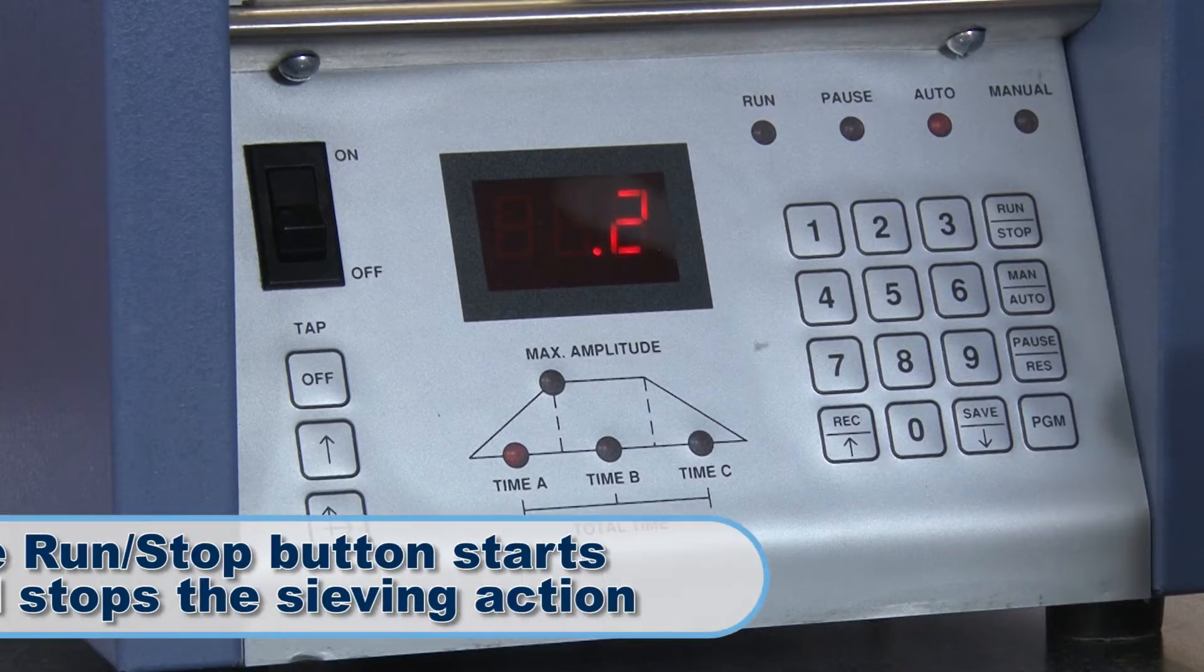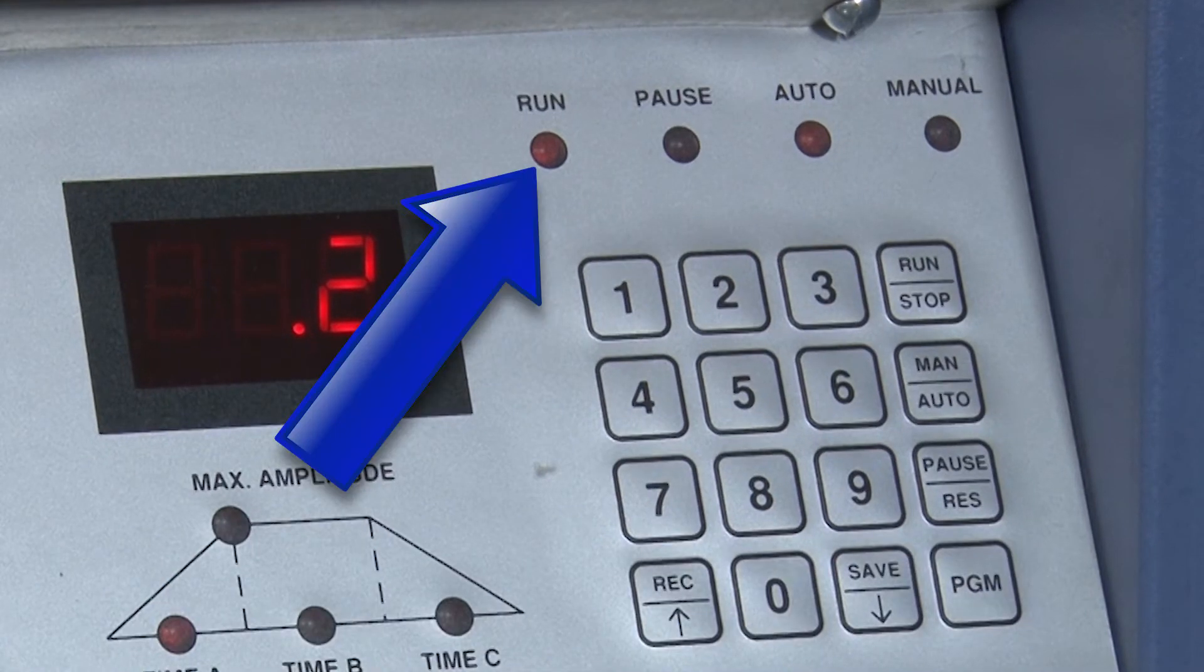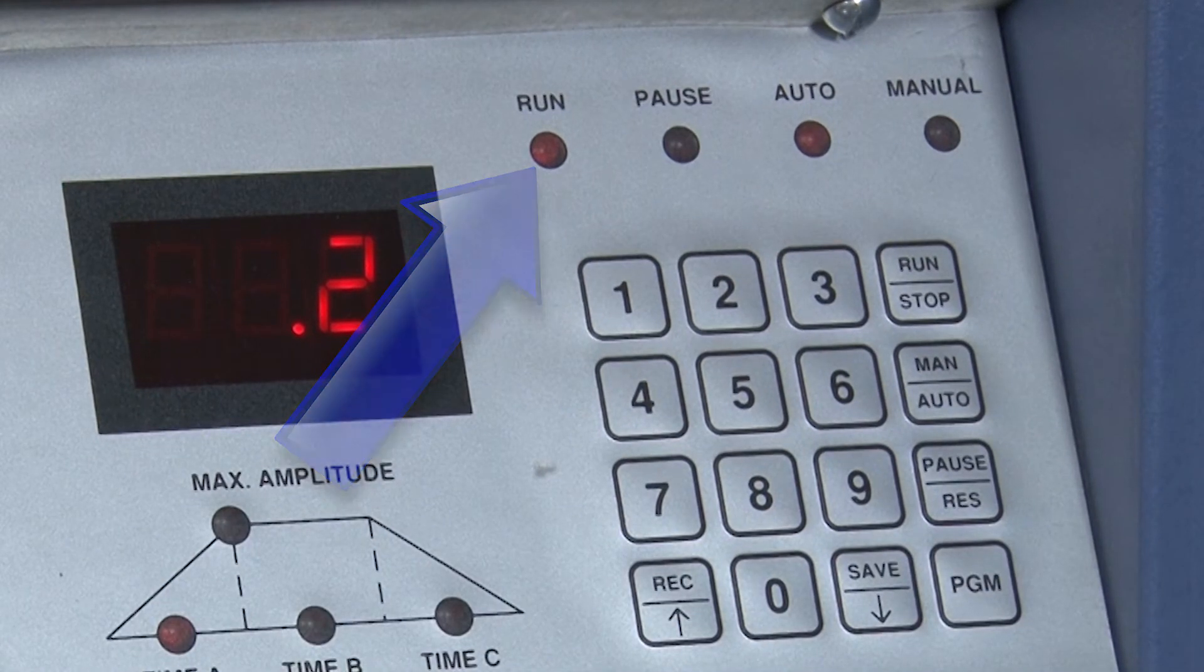The Run Stop button starts and stops the sieving action. The Run LED light is on when the Auto Siever is running.